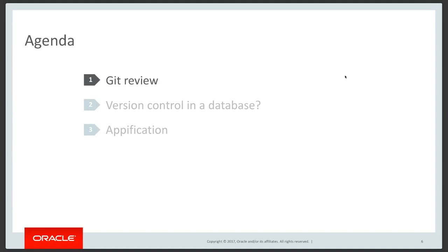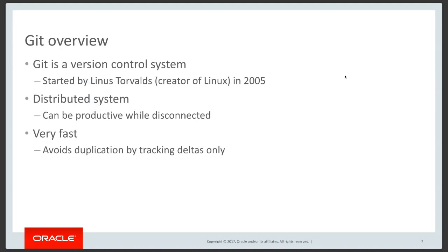Let's start with an overview of Git. Hopefully everybody here is using Git. Git is just a version control system — probably the most popular at this point. It was started by Linus Torvalds in 2005, the same guy that created Linux. It's a distributed version control system, which means you get a local copy of the entire repo, great if you're disconnected from the internet. It's also very fast, avoiding duplication of data by tracking deltas or diffs and changes between files.